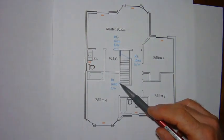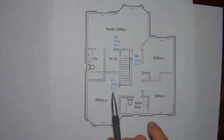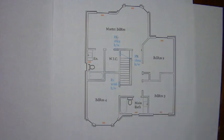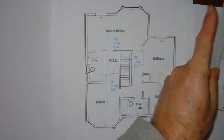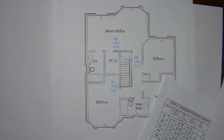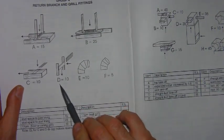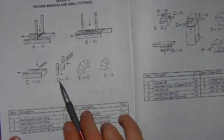So return air number one starts here and so there's a grill. Now the air goes through the grill and turns down into the stud space. That type of grill is a wall grill and it has a resistance of ten equivalent length, and it is a D fitting.